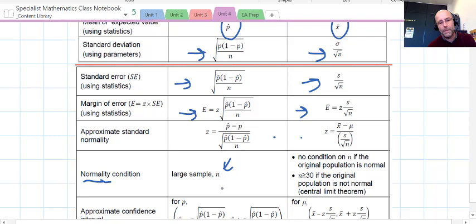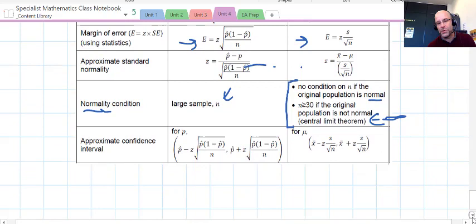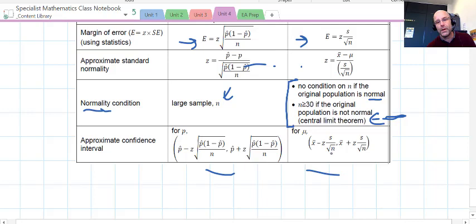Normality condition is a bit more vague, a little bit less rigid in math methods in the sample proportion type stuff, but it's more refined in the specialist maths. If it's normal, you don't need to worry about the size of n. But central limit theorem is applicable otherwise for other sorts of distributions, which is great. And there's our formulas for confidence intervals for each of them there, whether it's population proportion, sample proportion versus sample mean, population mean. How's that?